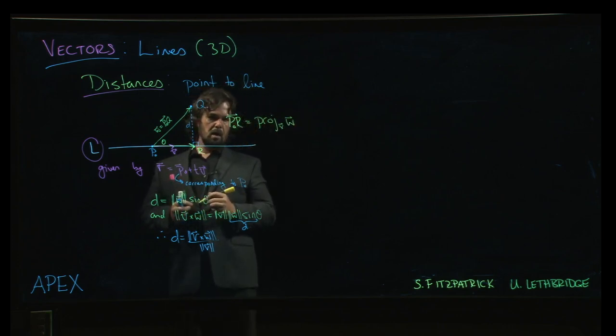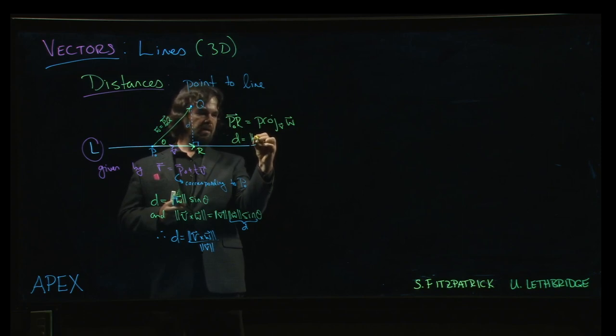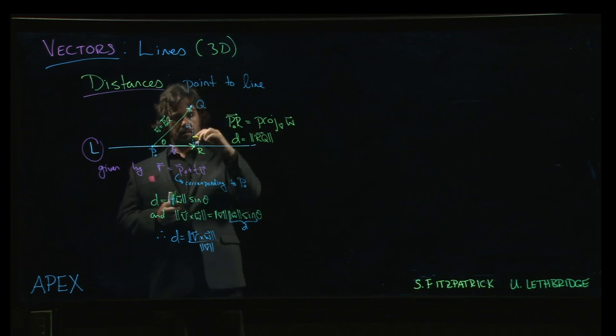So we can project W onto V. But then we can also notice that the distance that we're interested in is the magnitude of this vector going from R to Q.